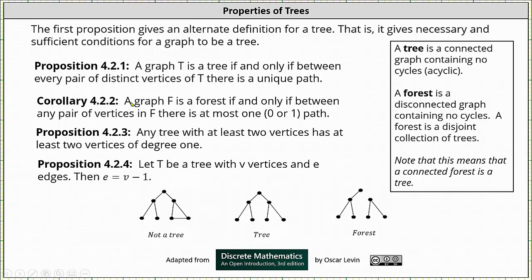Next we have a corollary. A graph F is a forest if and only if between any pair of vertices in F there is at most one path. Remember at most means zero or one path.